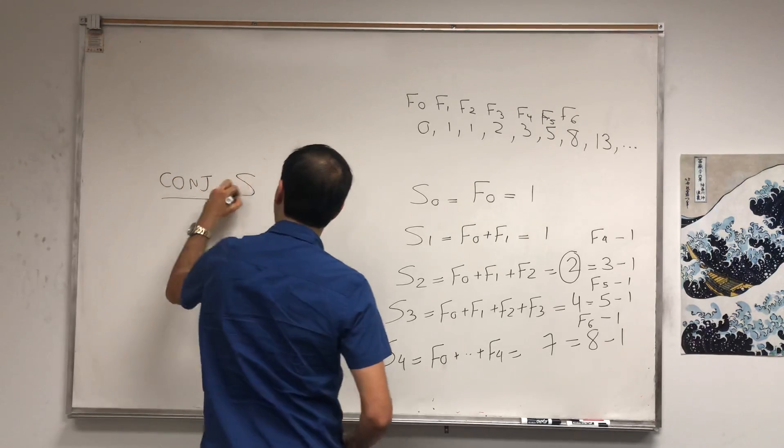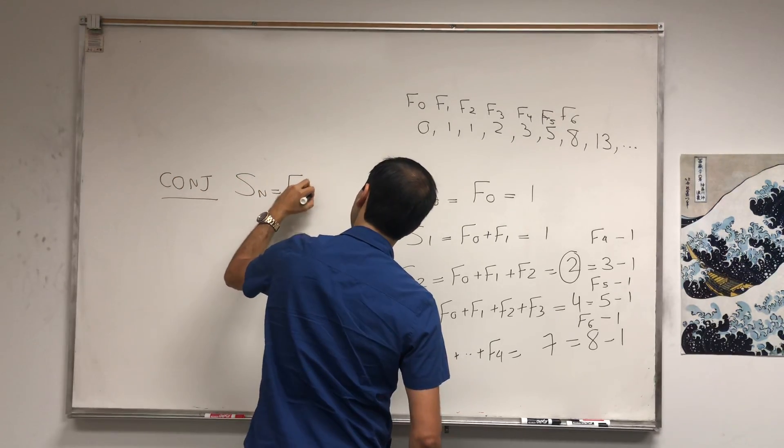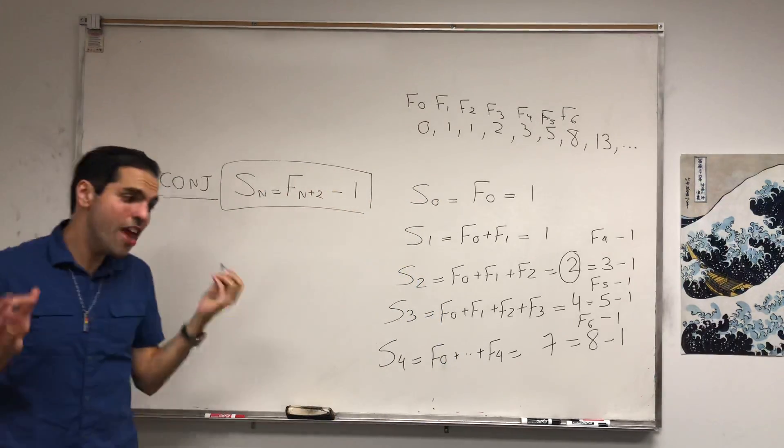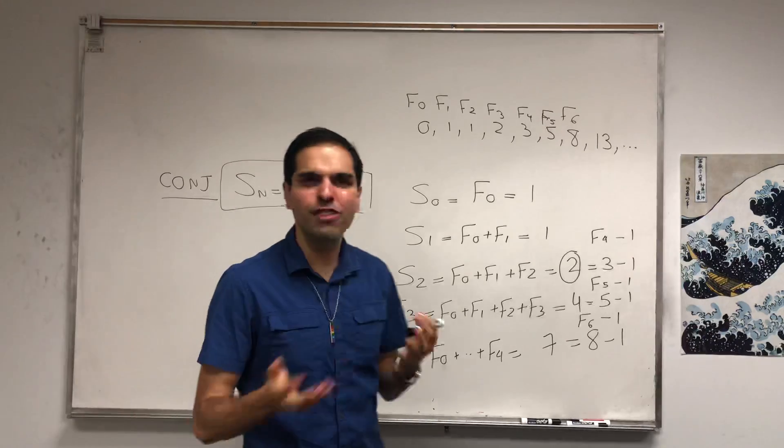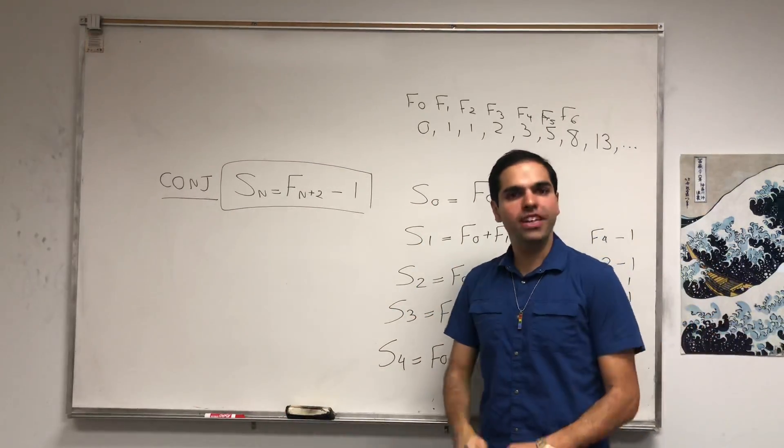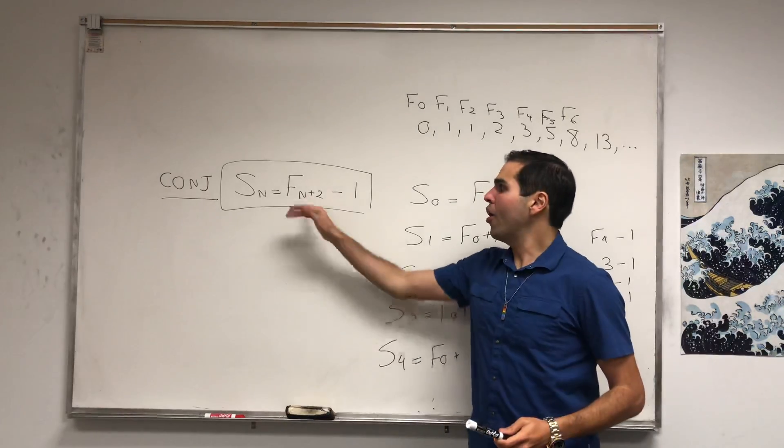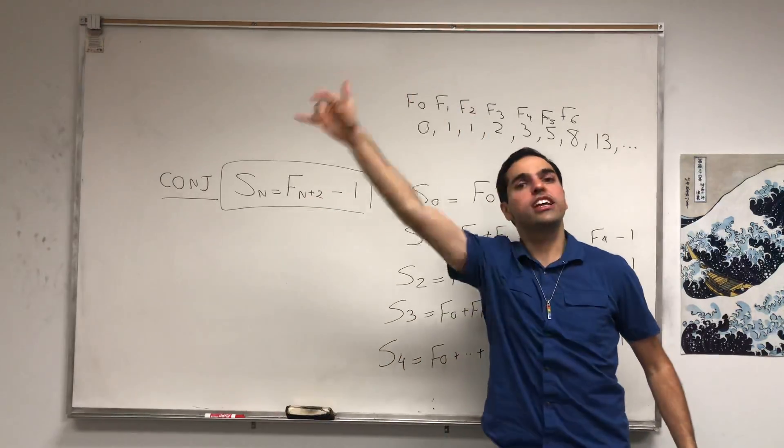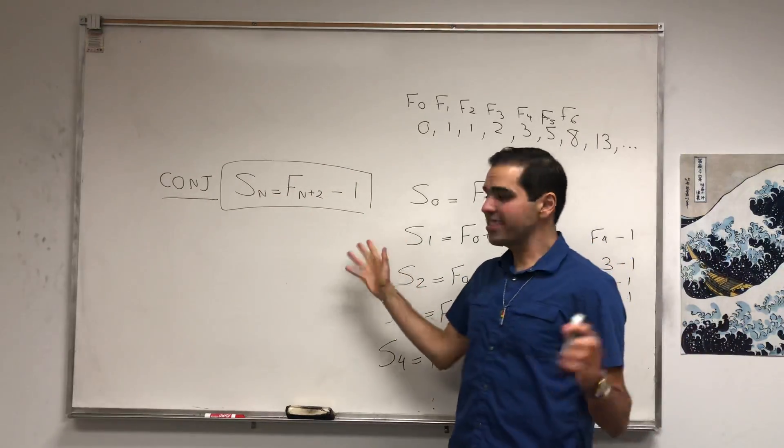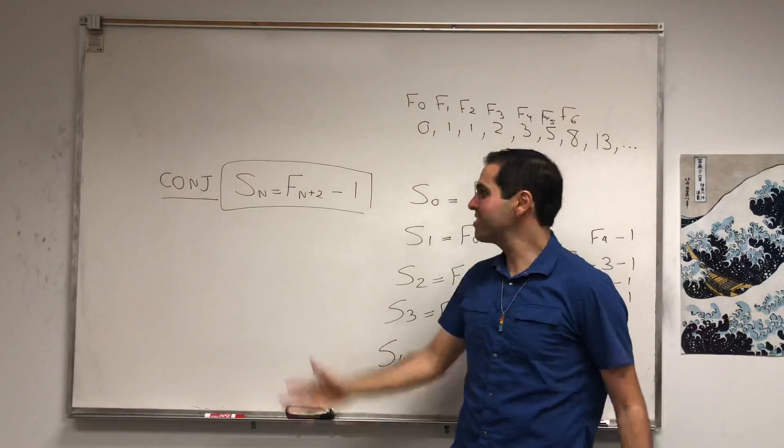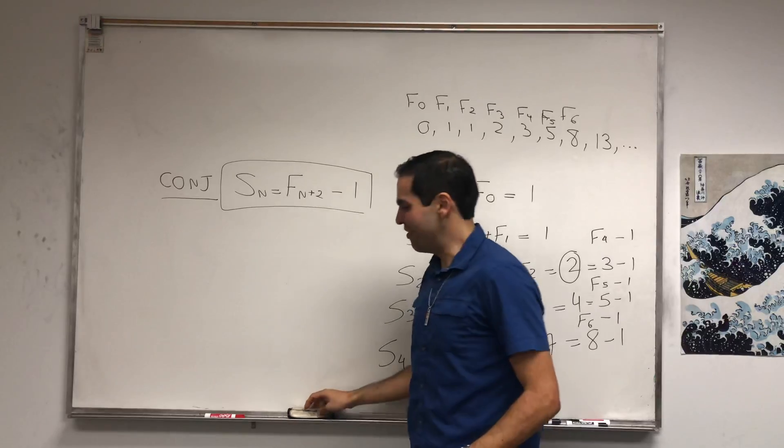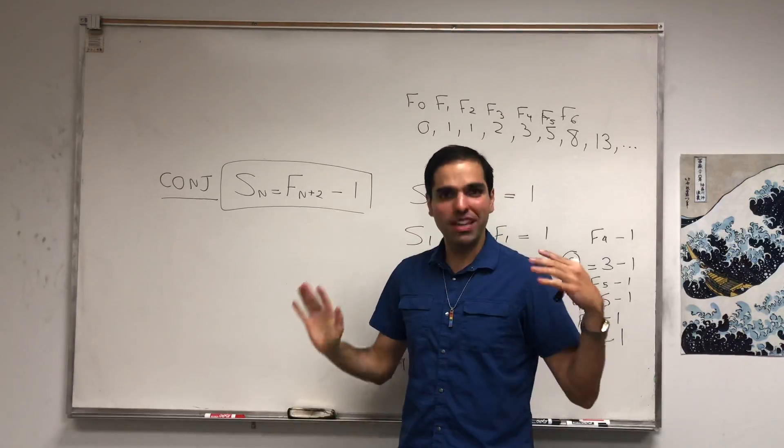Namely, Sn equals Fn+2 minus 1, which is a very interesting property of the Fibonacci sequence. In other words, if you want to know the sum of the bunnies up to generation n, all you have to look is two generations forward and just subtract 1 from it. Interestingly, the number of grandparent bunnies is just the sum of all the bunnies minus 1.